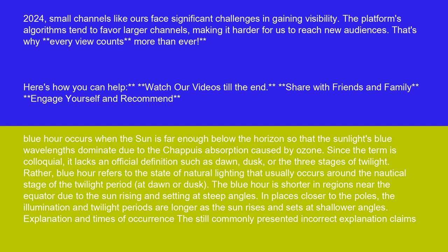Since the term is colloquial, it lacks an official definition such as dawn, dusk, or the three stages of twilight. Rather, blue hour refers to the state of natural lighting that usually occurs around the nautical stage of the twilight period, at dawn or dusk.